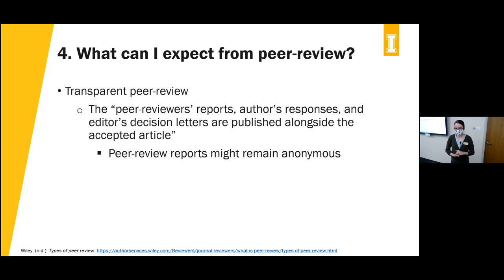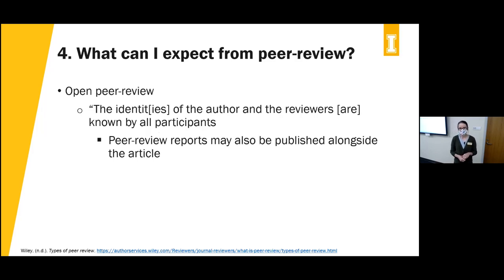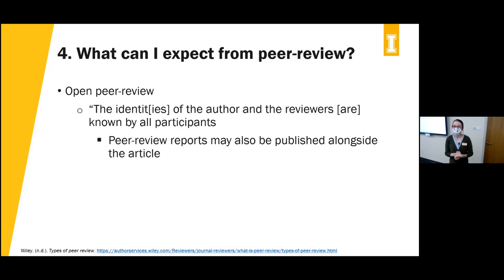Transparent peer review means the peer reviewer's reports and the author's responses and the editor's decision letters are published alongside the accepted article, though the reviewers' identities might still remain anonymous. Open peer review means the identities of both the author and the reviewers are known to all participants — including potential readers — and peer review reports may be published alongside the article. Reading peer review reports can be helpful to understand what reviewers are looking for.